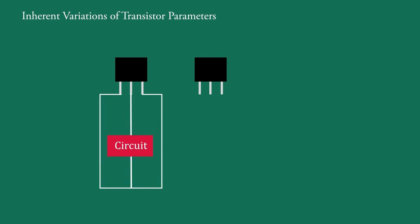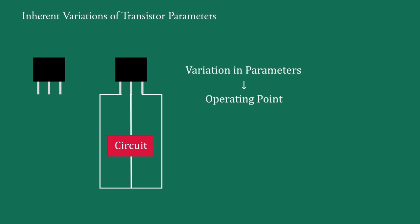When a transistor is replaced by another of the same type in any circuit, the variation in parameters changes the operating point.